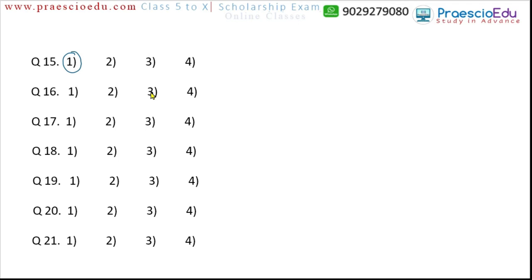Question 16: sarangi, sanai, sarod, and sitar. Sanai produces sound by using airflow — it is a wind instrument — while the others are string instruments. So sanai is the different one. Question 17: Krishna, Bhima, Ganga, and Godavari. Krishna, Bhima, and Godavari all originate from Maharashtra, but the Ganga does not belong to Maharashtra. So option three, Ganga, is the different one.